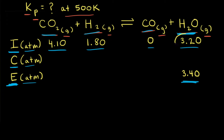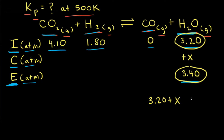The initial partial pressure of H2O is 3.20 atmospheres and the equilibrium partial pressure is 3.40 atmospheres, so H2O has increased in partial pressure. We write plus X for the change in H2O. Since 3.20 plus X equals 3.40, X equals 0.20. So the partial pressure of water increased by 0.20 atmospheres.